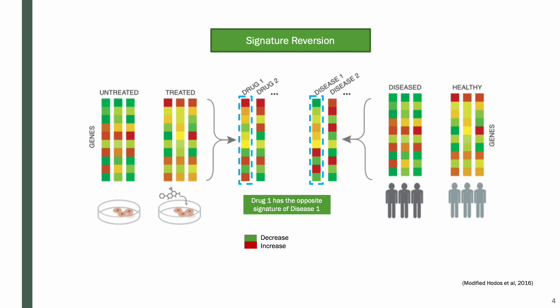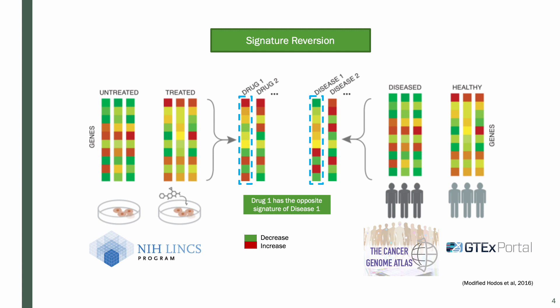In this case, drug 1 has an opposite profile to disease 1, so genes that are up in the disease are perturbed down by the drug. For this project, the disease profiles are from the Cancer Genome Atlas glioblastoma project, along with control samples from the TCGA project and GTEx brain tissue. For the perturbation profiles, the NIH LINCS program dataset was used.